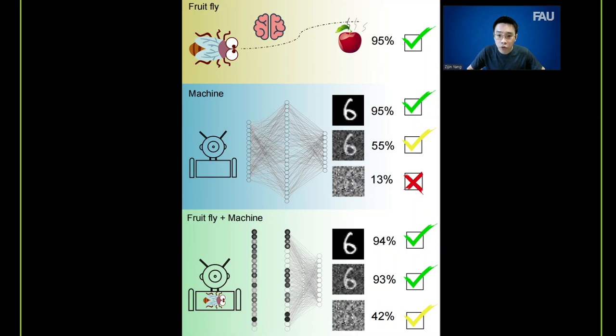Now, if we combine these two mechanisms together, we can improve the performance of classifying noisy data significantly and at the same time reducing a large amount of trainable parameters.